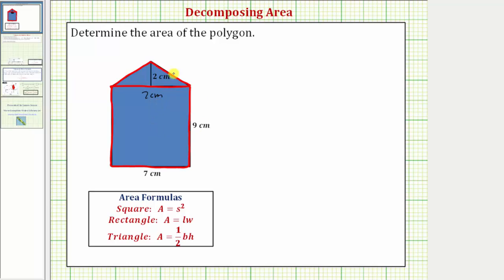Let's go ahead and label the area of the rectangle a sub one and the area of the triangle a sub two, which means the total area of the polygon is equal to a sub one plus a sub two.